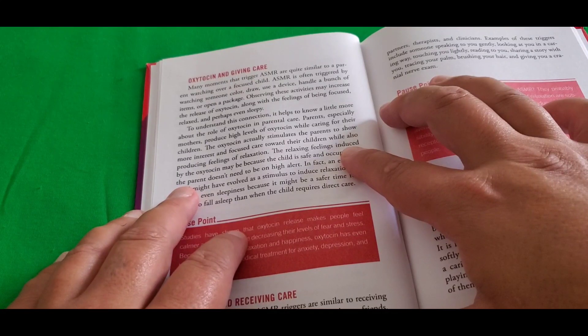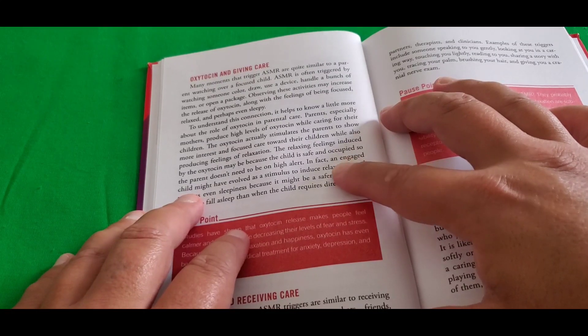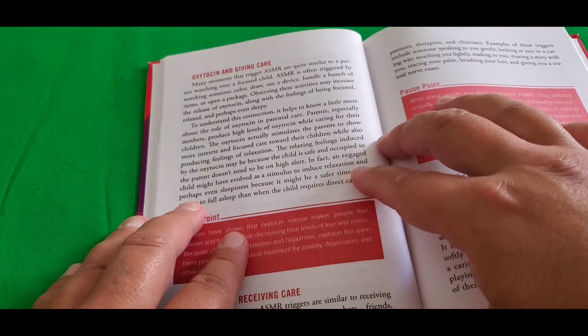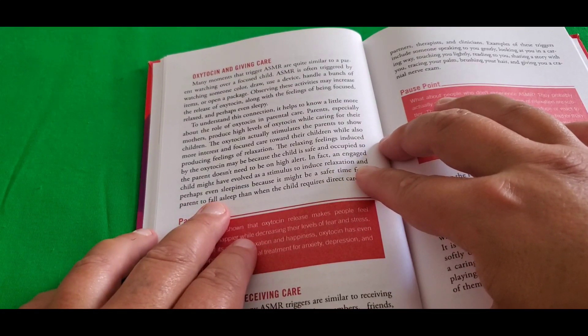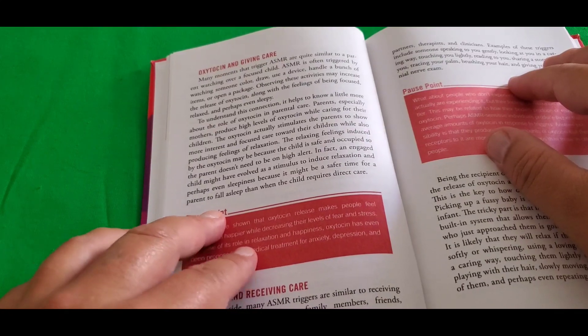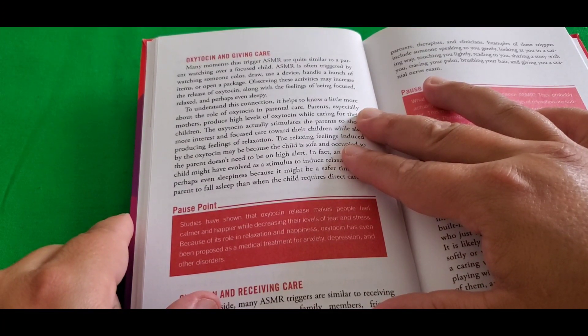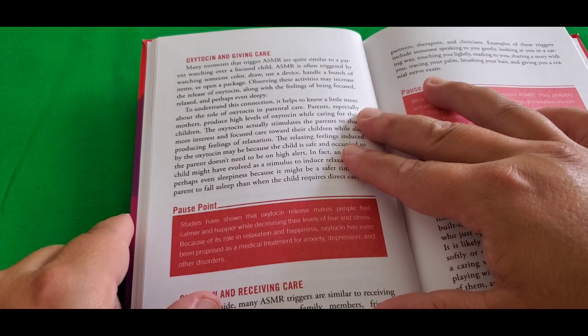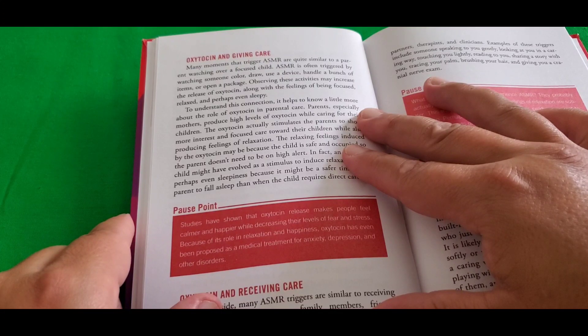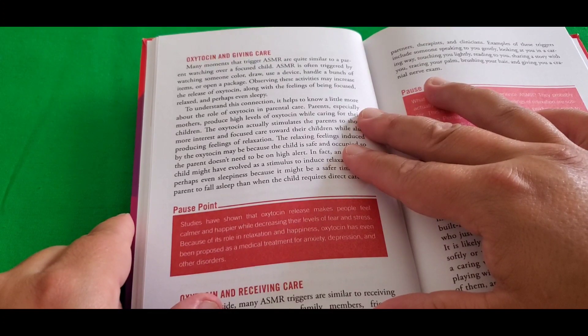Oxytocin and giving care. Many moments that trigger ASMR are quite similar to a parent watching over a focused child. ASMR is often triggered by watching someone color, draw, use a device, handle a bunch of items, or open a package. Observing these activities may increase the release of oxytocin along with the feelings of being focused, relaxed, and perhaps even sleepy. To understand this connection, it helps to know a little more about the role of oxytocin in parental care. Parents, especially mothers, produce high levels of oxytocin while caring for their children. The oxytocin actually stimulates the parents to show more interest and focused care toward their children while also producing feelings of relaxation. The relaxing feelings induced by the oxytocin may be because the child is safe and occupied, so the parent doesn't need to be on high alert.